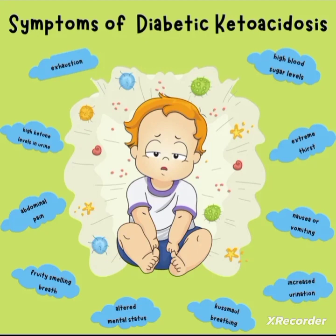Regarding mental status, the patient may be alert, lethargic, or comatose depending on blood sugar level. Key features to remember are urine ketone bodies, acetone breath, Kussmaul's respiration, polydipsia, and polyuria.